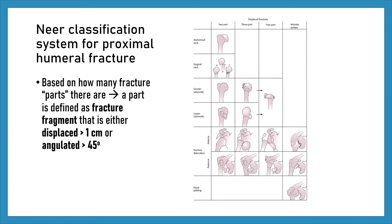Neer classification system for proximal humerus fractures groups fractures into non-displaced or one-part, two-part, three-part, or four-part fractures. Non-displaced fractures in the Neer system may have several fracture lines, but none of them meet the displacement or angulation criteria to be considered a part.